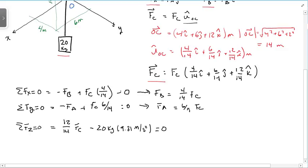OK. So now I look at my three equations. I have three equations. I have three unknowns, FA, FB, and FC. And it looks like from the third one, I can go ahead and solve for FC.